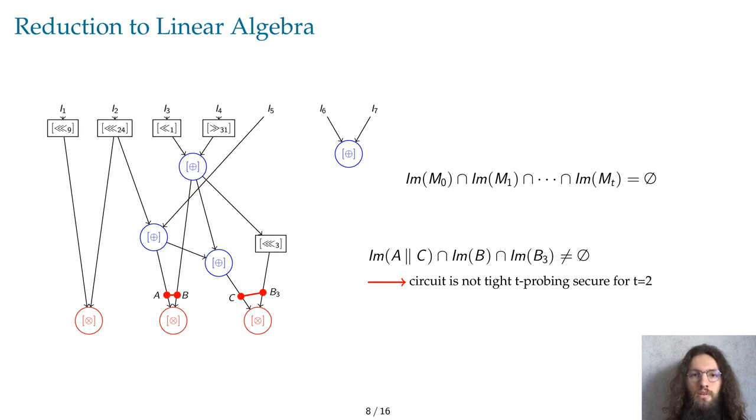One probe on a pair of inputs of a multiplication gadget can now be seen as a pair of matrices that we call blocks. And the T-probing security is now equivalent to the following property: no matter how an adversary chooses the placement of T probes and concatenates the two T-input blocks into T+1 matrices, the intersection of the images of these matrices must always be empty.